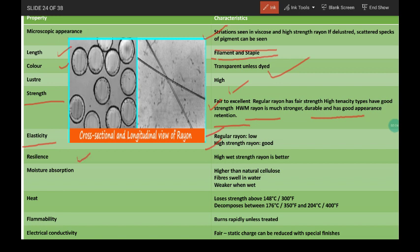Resilience: high wet strength rayon has better resilience qualities. Moisture absorption is higher than natural cellulose fibers. Fibers swell in water and are weaker when wet.